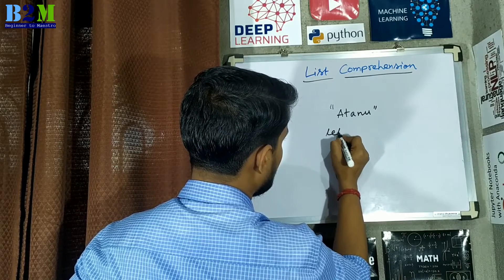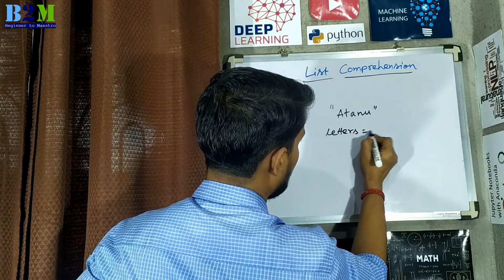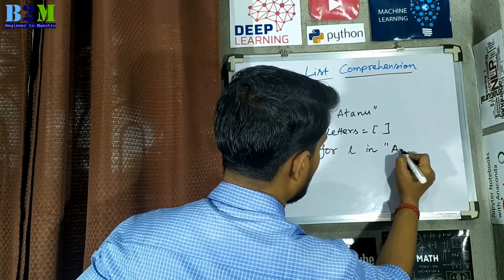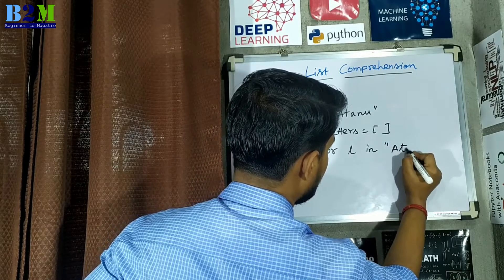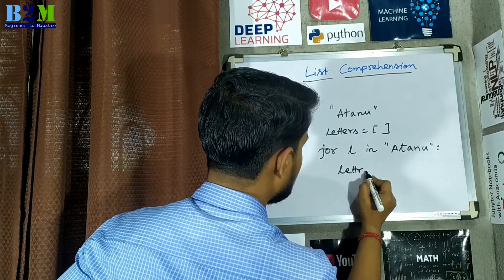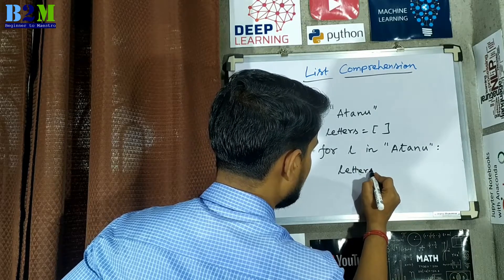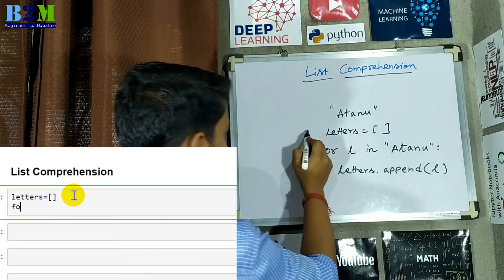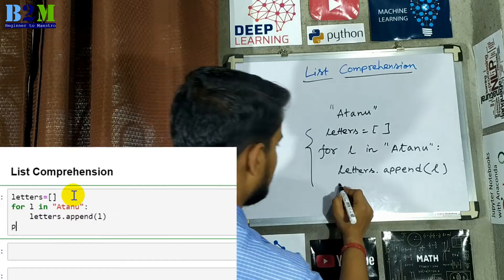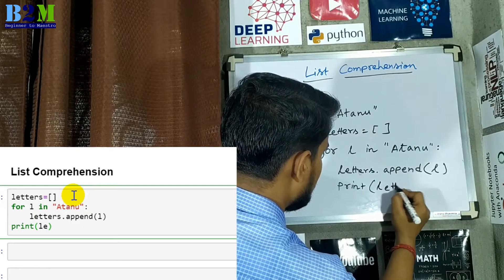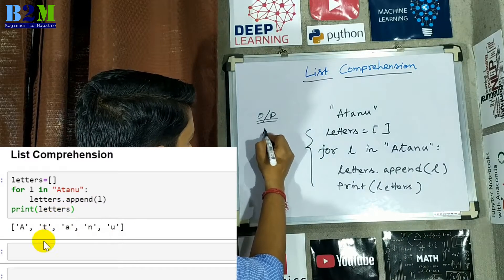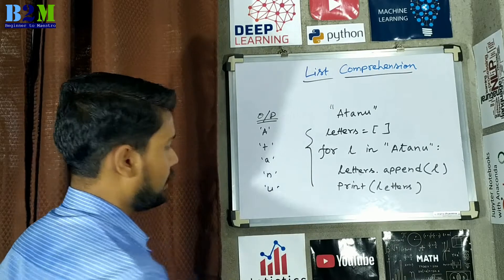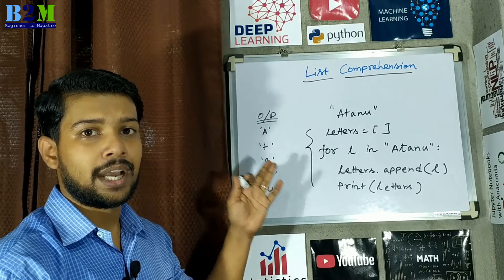So here, I create an empty list outside of the for loop. Then I create a for loop: for L in the string. Within the loop, I append each letter to the letters list. If you print the letters, the output will be A, T, A, N, U — each letter of the string is separated and stored in the list. This is the traditional way to create a list.